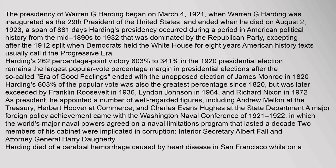A span of 881 days, Harding's presidency occurred during a period in American political history from the mid-1890s to 1932 that was dominated by the Republican Party, excepting after the 1912 split when Democrats held the White House for eight years. American history texts usually call it the progressive era.